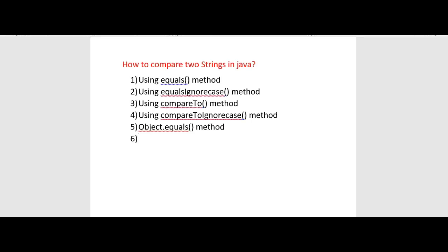Let's start with the equals method. The equals method compares two strings for content equality. If both strings have the same content, the equals method will return a boolean value — true or false. If two strings contain the same letters in the same order and in the same case, they will be equal and equals will return true; otherwise it will return false. The equals method is defined in the Object class and the String class overrides it for character-based comparison.